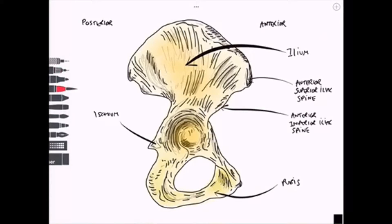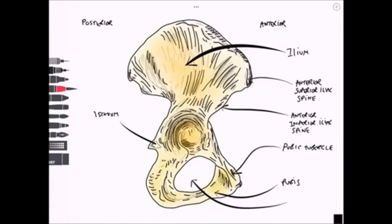Moving inferiorly once more, we have the pubic tubercle. This is the distal attachment site of the inguinal ligament. Now we can name the hole in the middle of the bone — the obturator foramen — filled by a membrane known as the obturator membrane, which transmits the obturator nerve and the obturator vessels.